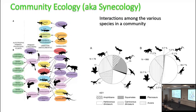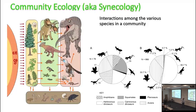Community ecology looks at the interactions between the various species in a community — not the ecology of, say, Allosaurus fragilis, but instead the ecology of the Morrison Formation dinosaurs and the associated organisms. Here, in the Hell Creek Formation, we've got the interaction between producers — the plants getting their energy from sunlight — feeding the herbivores, and the herbivores feeding the second-order consumers, the carnivores, in various relationships. And down here are decomposers.